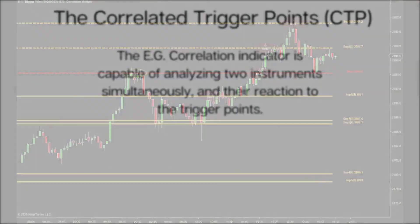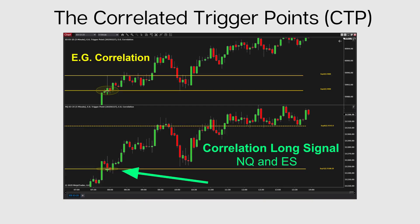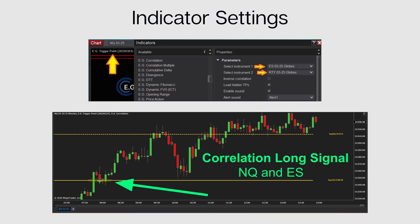You saw the EG Correlation Indicator we developed. It is capable of analyzing two instruments simultaneously and their reaction to their trigger points, and the indicator produces signals accordingly. This is a good example of ES and NQ where a long signal was generated — the signals mostly do not lag. Here is another example where the EG Correlation Indicator identified that both behaved the same, meaning they reached the support level at the same time. Looking at the indicator settings, there are essentially zero settings except for the instruments you need to provide.